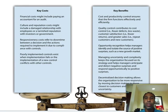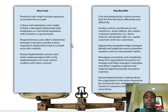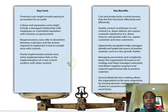Key costs: financial costs might include paying an accountant for an audit. Culture and reputation costs might include a damaged relationship with employees or a tarnished reputation with investors or government. Responsiveness costs refer to downtime between a decision and the actions required to implement it due to compliance with controls — did you act fast enough to take advantage of the opportunity? Poorly implemented controls exist when implementation fails or conflicts with other controls.